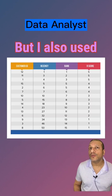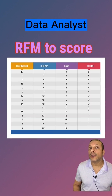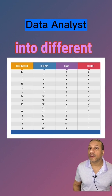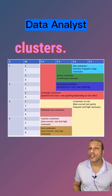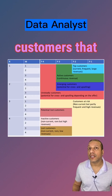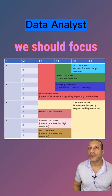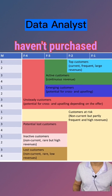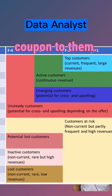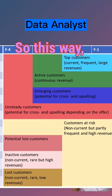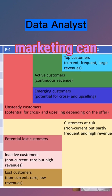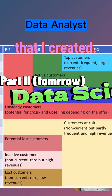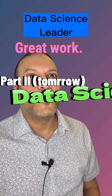I also used RFM to score each customer and put them into different clusters — so we can figure out which ones are our top customers that we should focus on, and which ones just haven't purchased recently. Maybe we should send a discount coupon to them. This way, marketing can start making decisions based on these groups that I created. Great work.